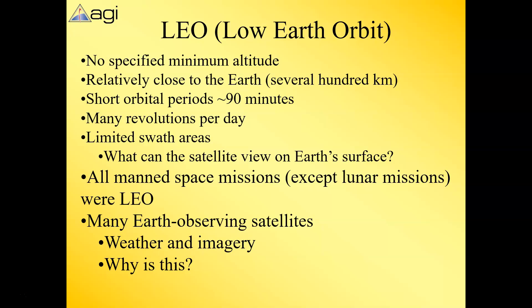By 'close to earth' we mean a couple hundred miles — two, three, four hundred miles. One advantage of low earth orbits is they can see closer to earth than higher orbits, but a limitation is that they can't see as wide a swath. Types of satellites in LEO include weather satellites, imagery satellites, and a lot of spy satellites.